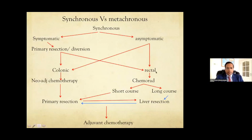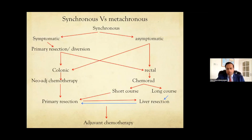For rectal tumors the situation differs. You give chemo-radiation — short course or long course, decided by oncologists and colorectal surgeons. Short course chemo-rad controls the primary, with chemo acting as a radiosensitizer — not proper systemic chemo — so you go for primary resection then liver resection then adjuvant. For long course chemo-rad, colorectal surgeons prefer to wait 12 weeks before colonic resection due to anastomotic leak risk. We utilize that 12-week window for liver-first resection — one indication for liver-first approach following long course chemo-rad.